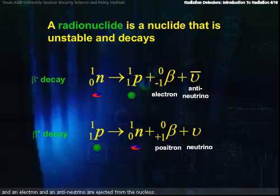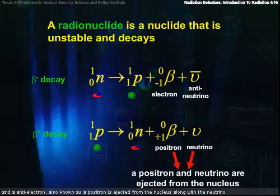Beta decay also has an antimatter decay where a proton is changed into a neutron and an antielectron, also known as a positron, is ejected from the nucleus along with a neutrino.